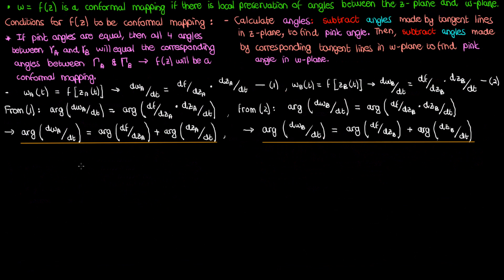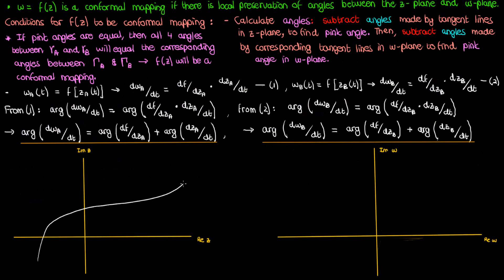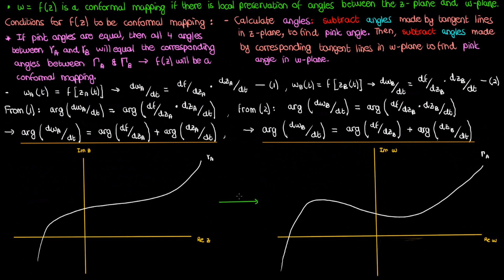Let's explain these argument equations with some before and after pictures of the individual curves gamma a and gamma b. We'll draw two sets of axes in the z-plane and w-plane, and draw the curves gamma a and its image after applying the function f of z, which is capital gamma a. If I pick z0 as my example point, then this argument equation says that the argument of dz/dt at z0, plus the argument of df/dz_a at z0, equals the argument of dw_a/dt at the image of z0, which is w0. The arguments of dz/dt and dw/dt both represent tangent lines to the curves. The arguments of these tangent lines therefore represent the angle that those lines make relative to the positive horizontal axis.